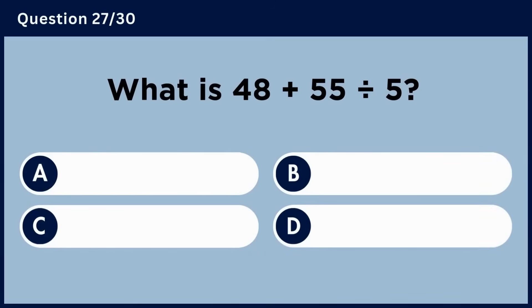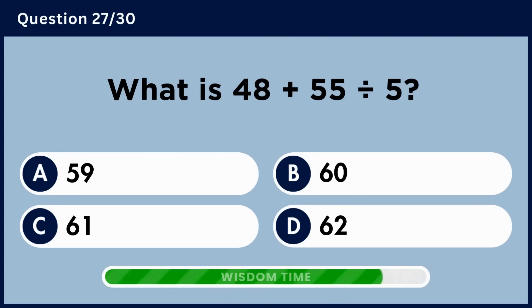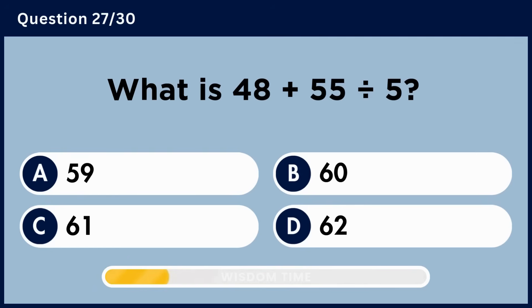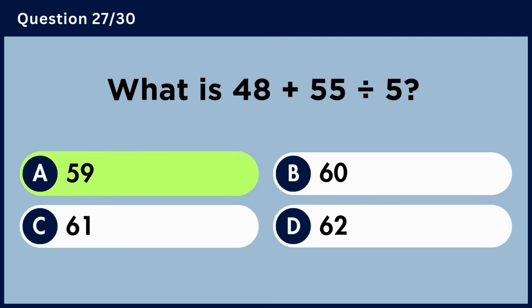What is 48 plus 55 divided by 5? Answer A: 59.